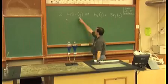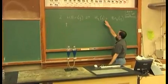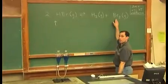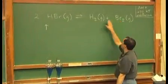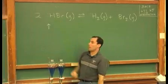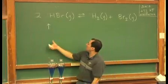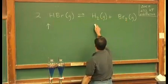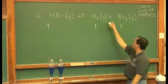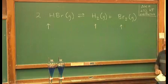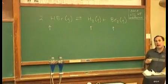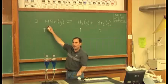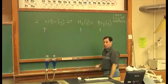In chemical equilibrium, HBr is constantly going and making H2 and Br2, and at the same rate, if we're at equilibrium, Br2 and H2 react to make HBr. If we increase the amount of HBr, equilibrium shifts to the right, and the concentrations of H2 and Br2 will increase. A simple analogy would be making cookies — if you add more ingredient, you're going to make more cookies.